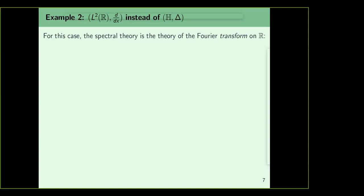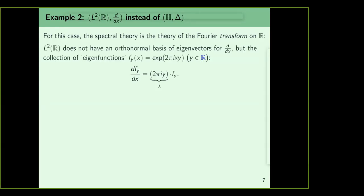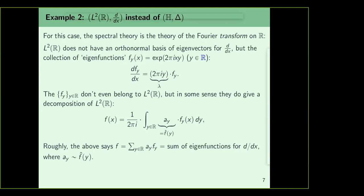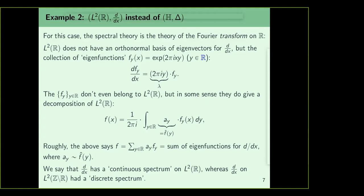The second example is d/dx acting on L²(R). Its spectral theory is not the theory of Fourier series, but the theory of the Fourier transform. Here we have similar-looking functions e^{2πixy}, which are again eigenvectors for d/dx, with 2πiy coming out. This time these elements do not even belong to L²(R), so we cannot say these are a basis in any reasonable sense. But any function F can be written as an integral of these functions — informally, d/dx on L²(R mod Z) has a discrete spectrum, whereas on L²(R) it has a continuous spectrum.